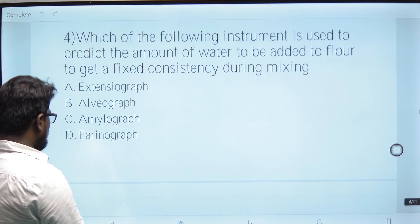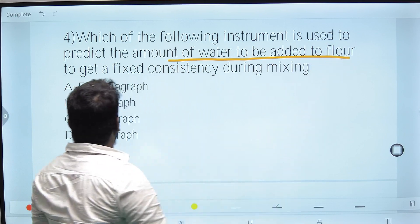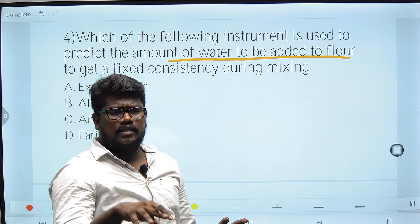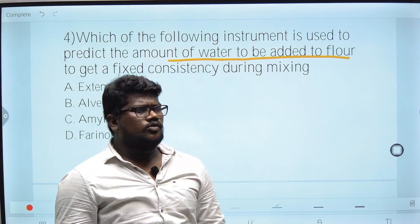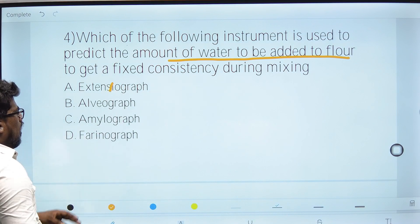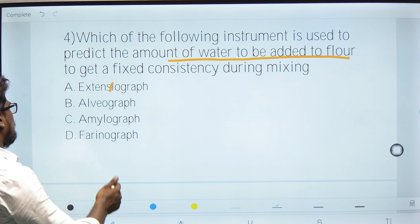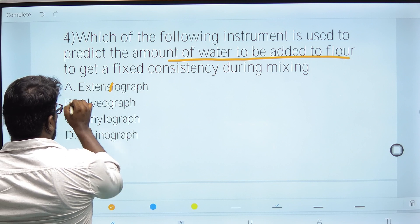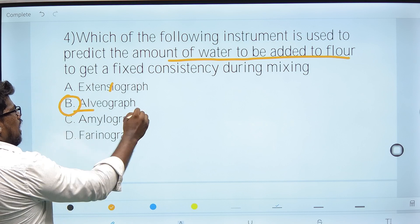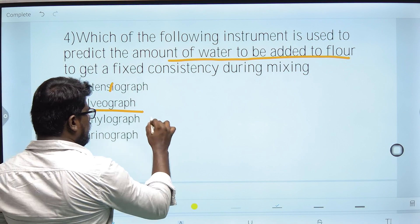Fourth question: Which instrument is used to predict the amount of water to be added to flour to get consistency during mixing? The options include the extensograph, amylograph, and farinograph. The farinograph is used to find water absorption quantity, while the extensograph measures dough extensibility.